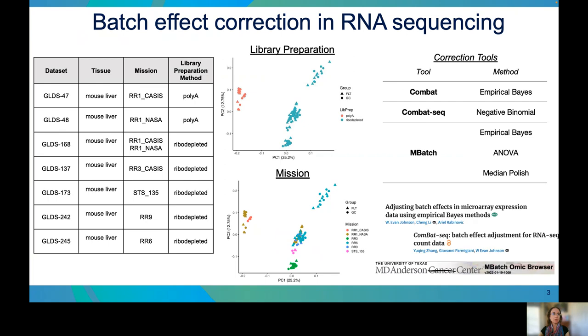Here, we evaluate the effectiveness of five different popular batch effect correction tools: COMBAT, COMBAT-seq, and three tools from the MBATCH suite from MD Anderson — Empirical Bayes, ANOVA, and Median Polish.